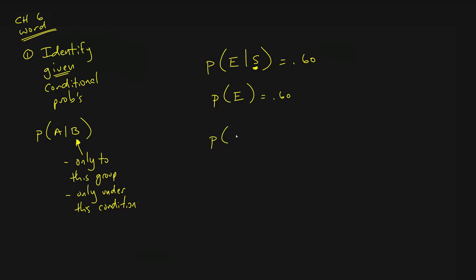Conditional probabilities might be different for different groups. For example, the probability that somebody is bald given that they're male might be about 10 or 15%, whereas the probability that somebody is bald given that they're female is maybe 0.001%. So conditional probabilities can help differentiate between two groups who have two different probabilities. You're going to see this in the wording of the question. In our question, we're going to be looking at the chance that somebody has a certain app installed, and whether or not they got into an accident in the past year. What we have to identify is whether the probabilities being given in words only apply to one group or another — if so, those are conditional probabilities.